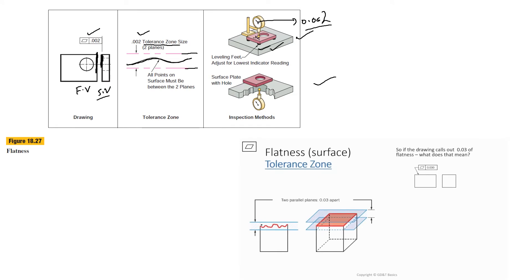In another example, the actual surface profile on a rectangular slab must lie between two parallel planes. In the feature control frame we have the flatness symbol and the required tolerance for this geometric feature.